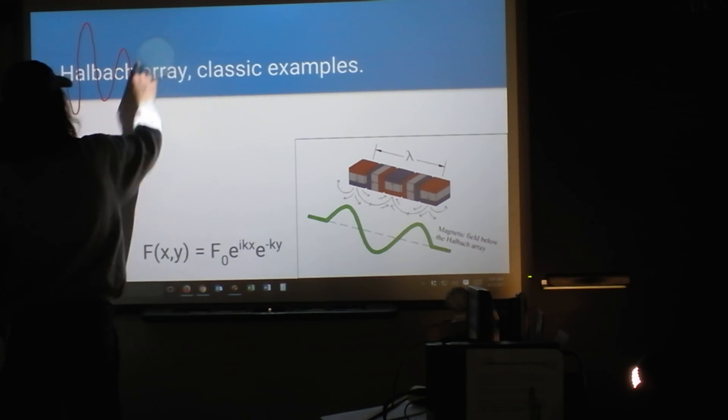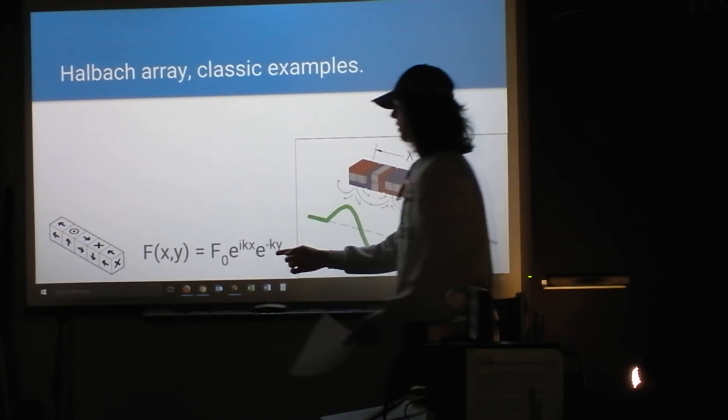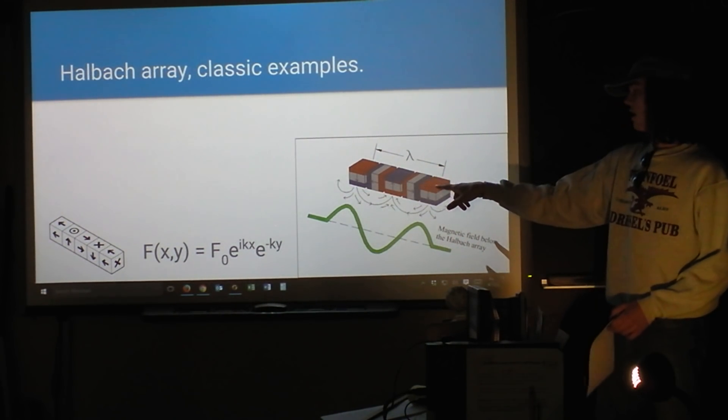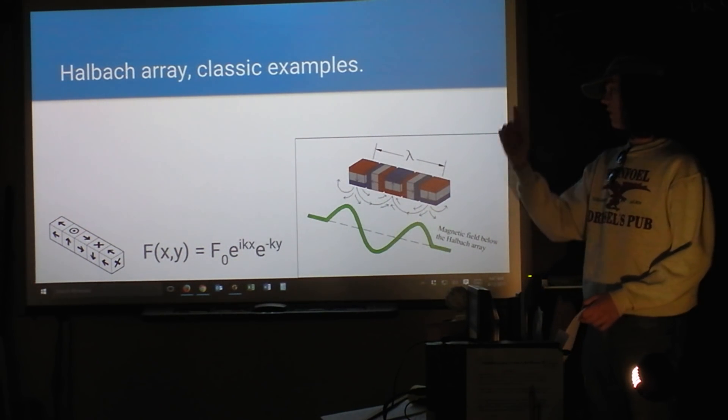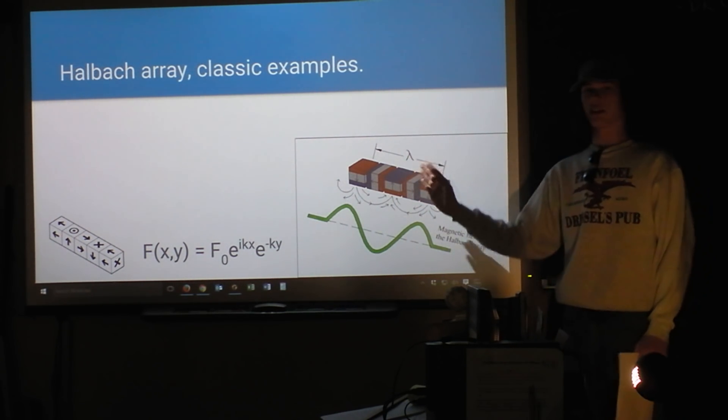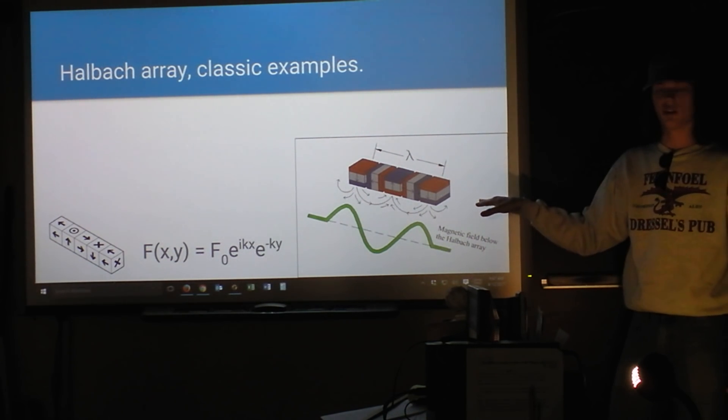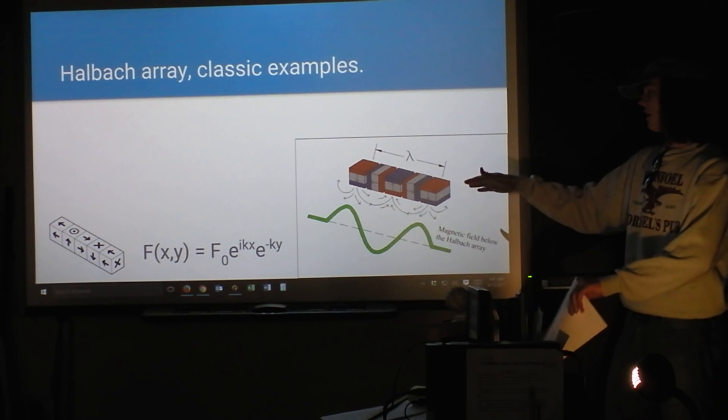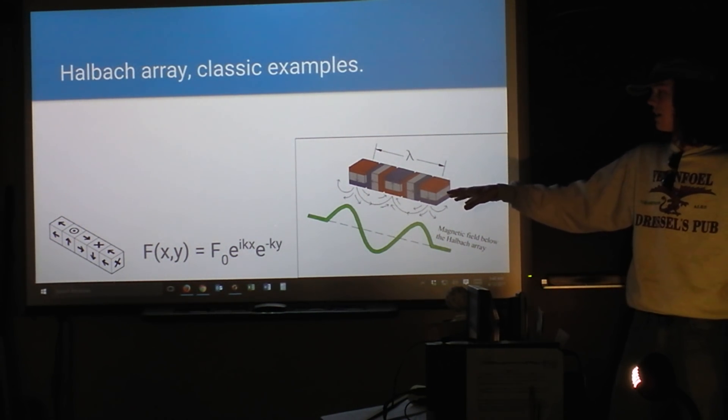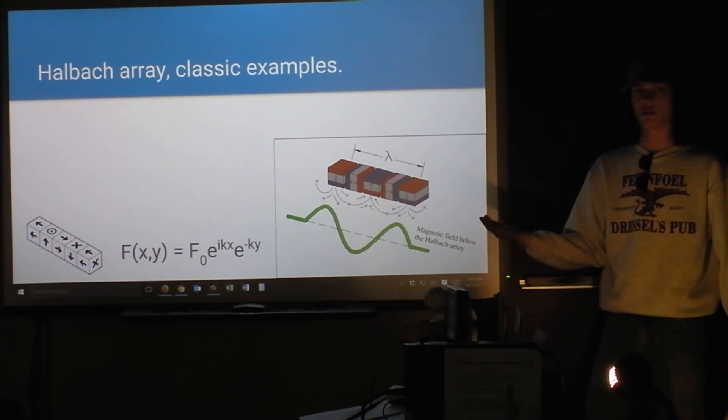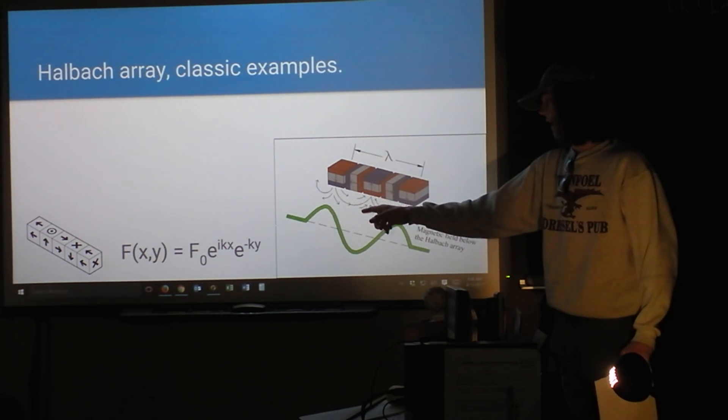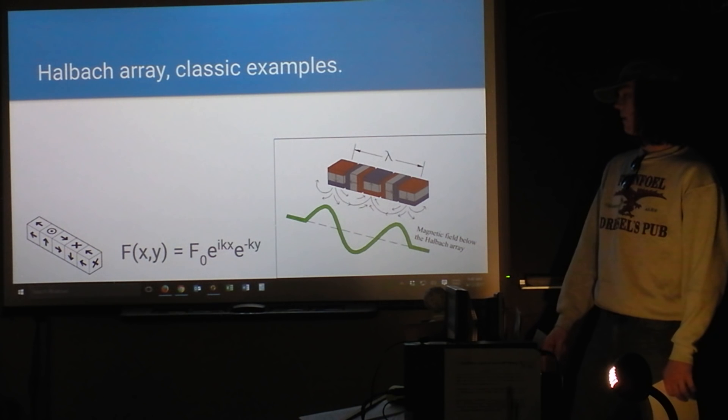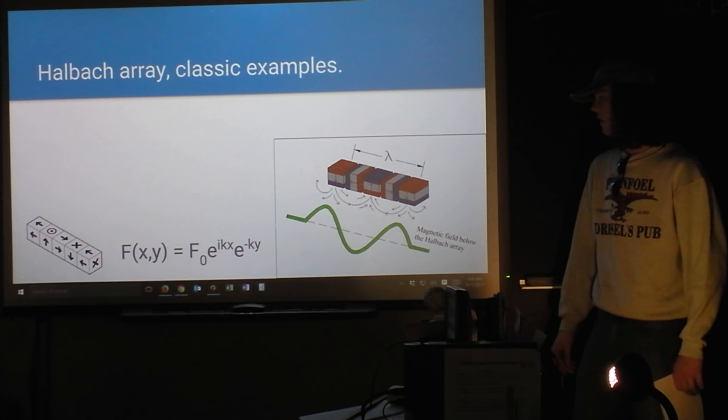So I wanted to also take a second to talk about other Halbach arrays that are much more interesting. The classic example of the Halbach array, it does have an equation for the field strength at the points around it. This is a representation of the array. You have poles going down, left, up, right, down. And basically on the top side of this strip here, there's almost no magnetic field. It's very very weak. And there is a mathematical expression that shows this pattern going on infinitely. And if you expand that pattern infinitely, there would be zero field on the other side. But obviously, since this is the real world, it has to end at some point.